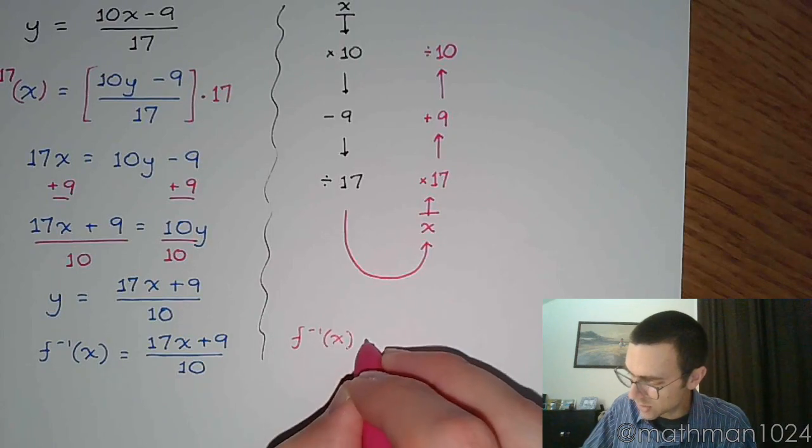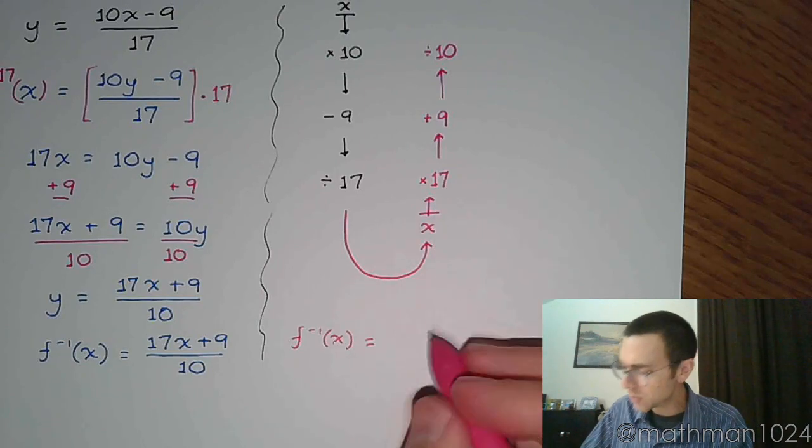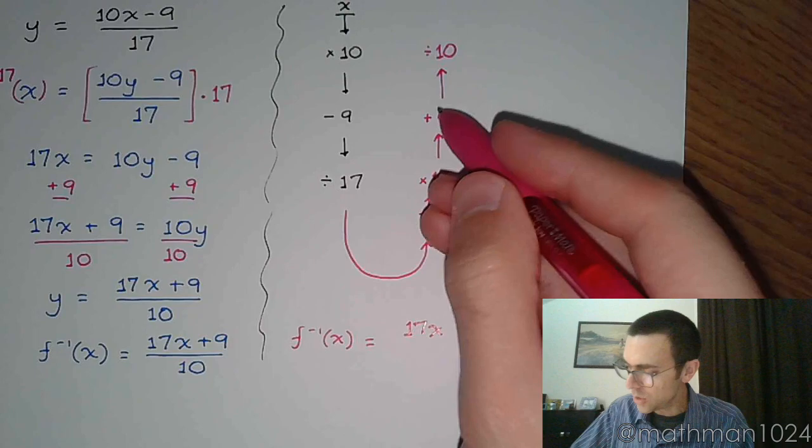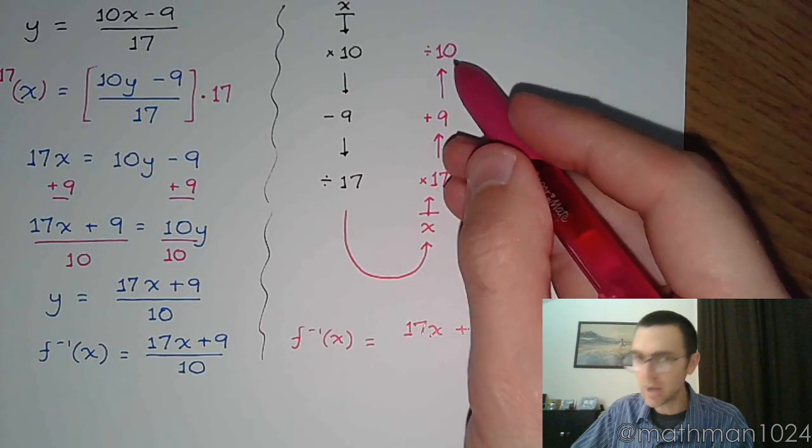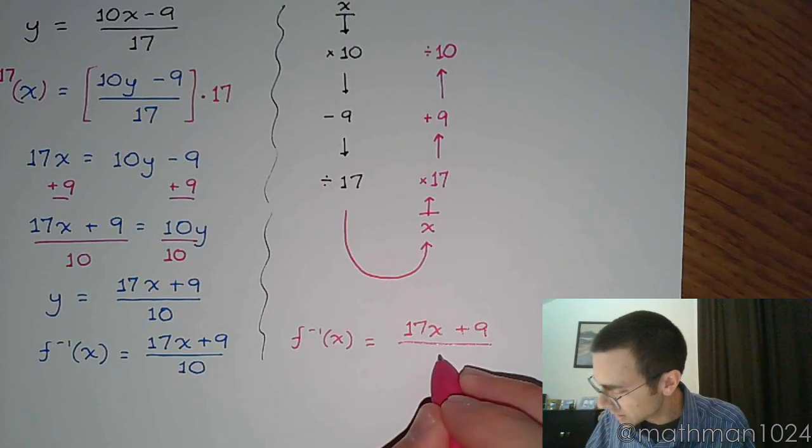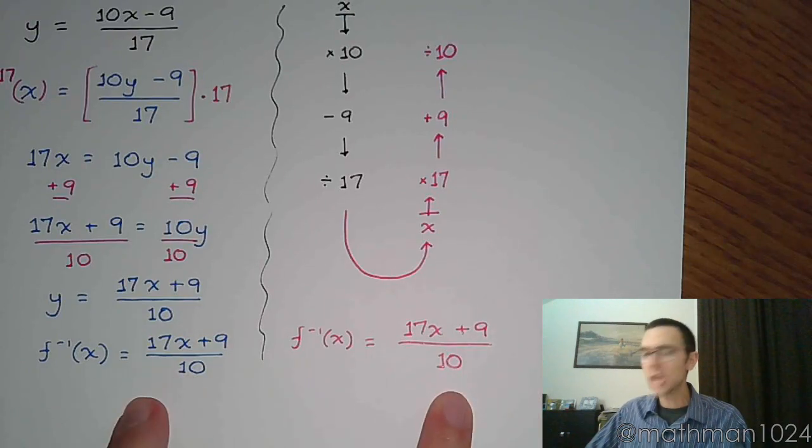So my inverse function, look what you're doing with x. x times 17, so you start with 17x. You add 9 to that expression, and then you divide by 10. Now, when you divide by 10, you're dividing everything that came before it by 10, like that. So these guys are exactly the same.